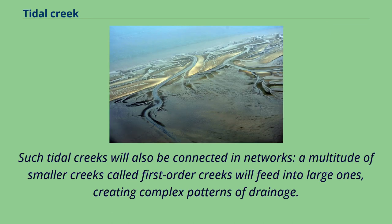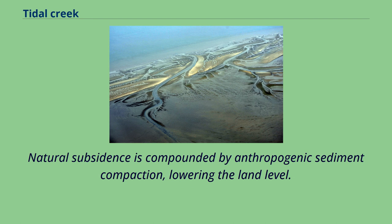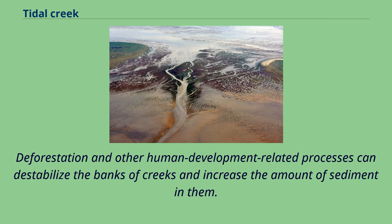Such tidal creeks will also be connected in networks — a multitude of smaller creeks called first-order creeks will feed into larger ones, creating complex patterns of drainage. Especially in areas prone to compaction or subsidence, like peat wetlands, human use of tidal creek flow can lead to the expansion of the creeks. Natural subsidence is compounded by anthropogenic sediment compaction, lowering the land level. Deforestation and other human development-related processes can destabilize the banks of creeks and increase the amount of sediment in them.